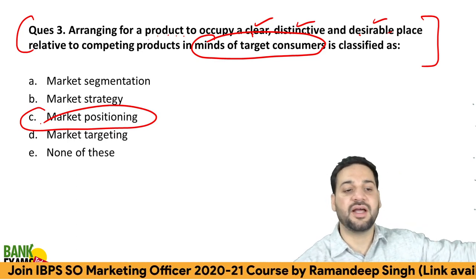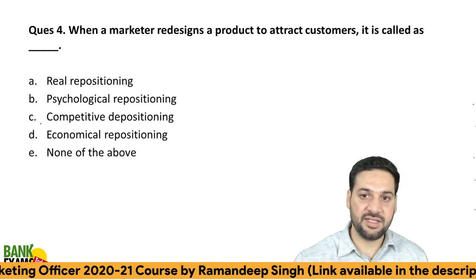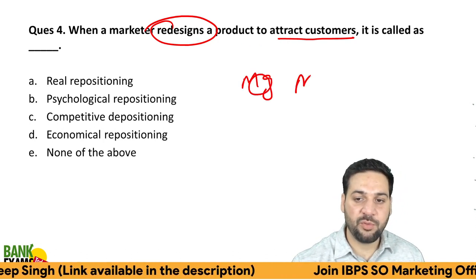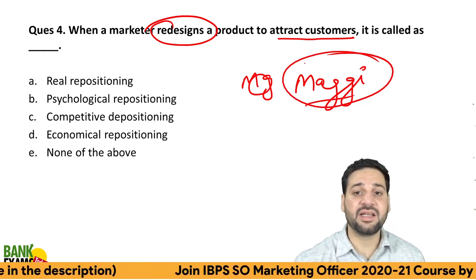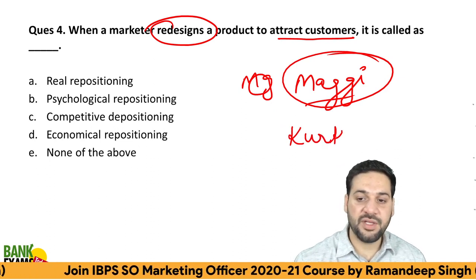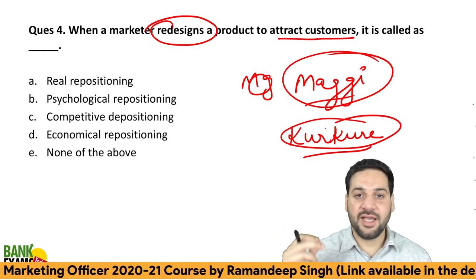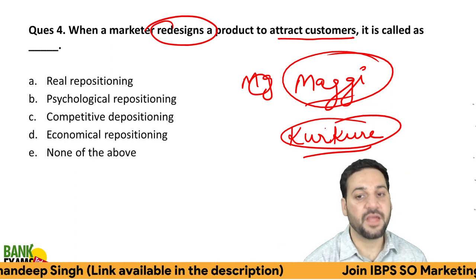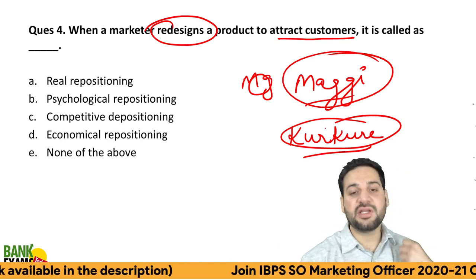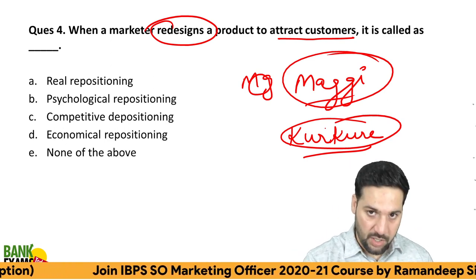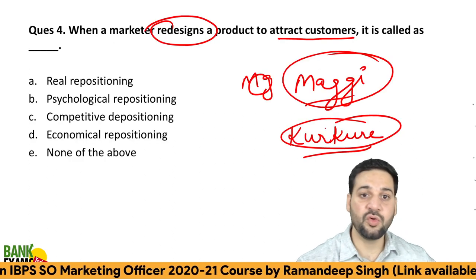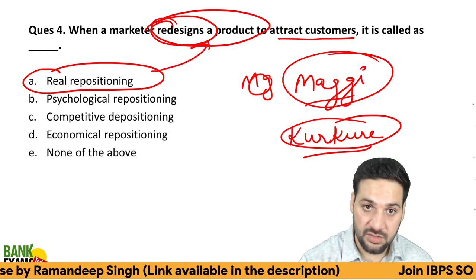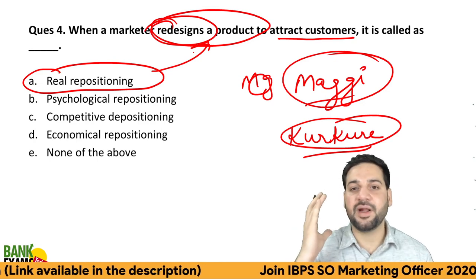When a marketer redesigns a product to attract customers — that is real repositioning. For example, when Maggie was banned, Kurkure also faced campaigns claiming it had plastic. They then ran campaigns highlighting their ingredients, telling customers what's actually in Kurkure. That is repositioning. Real repositioning means actually making changes to the product to change the perception of the brand in the minds of consumers.